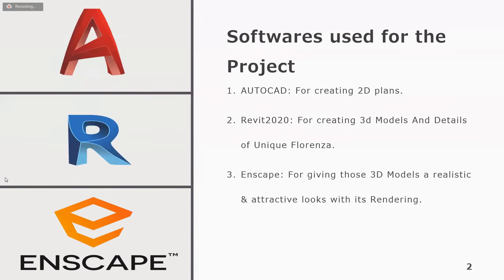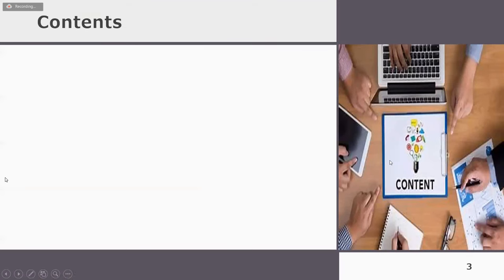The software I have used for this project: the first is AutoCAD, which I used for creating 2D plans; the second is Revit, which I used for creating 3D models and details of Unique Florenza; and the third is Enscape, for giving those 3D models a realistic and attractive look with rendering images.